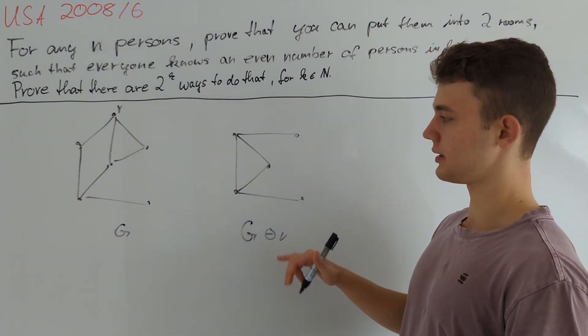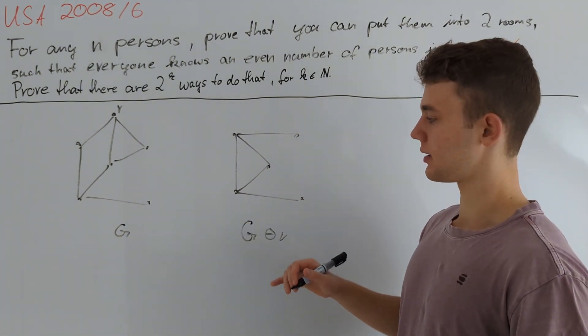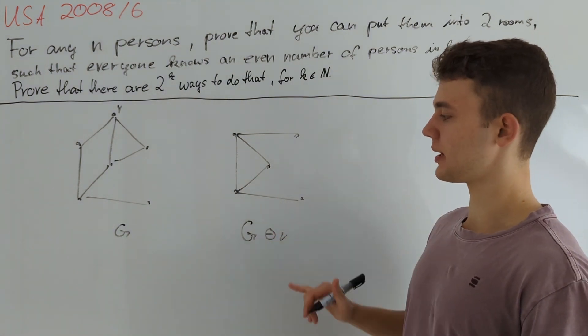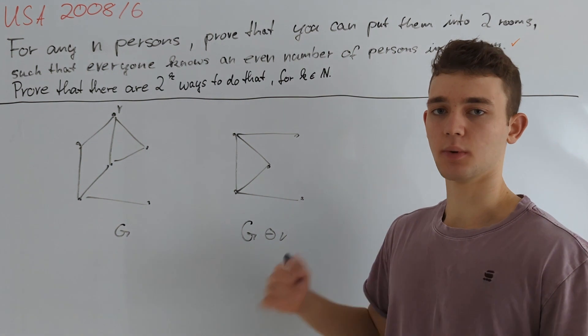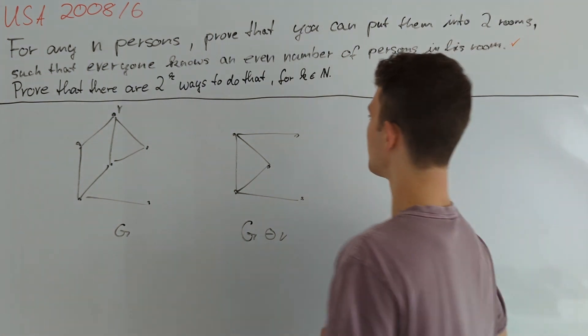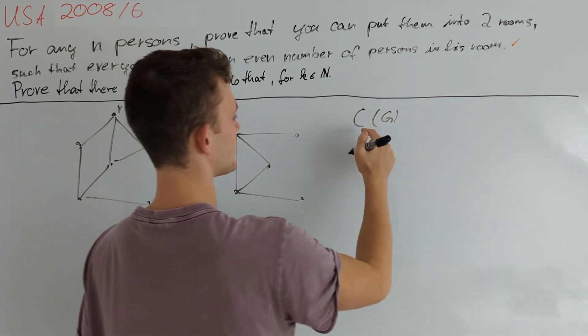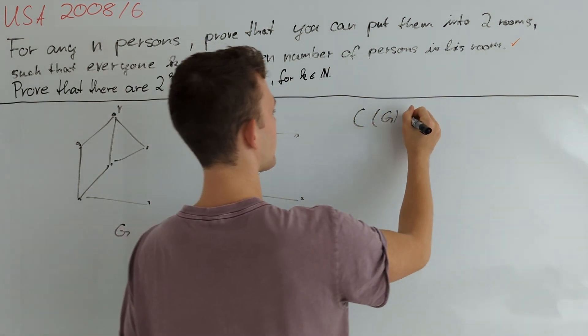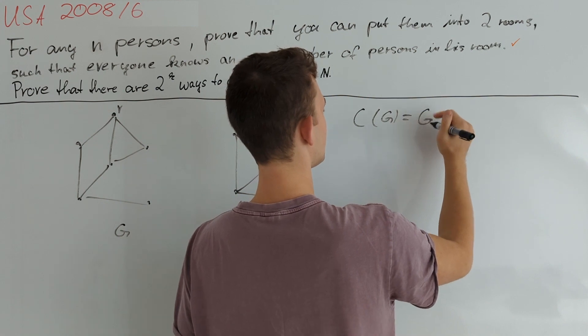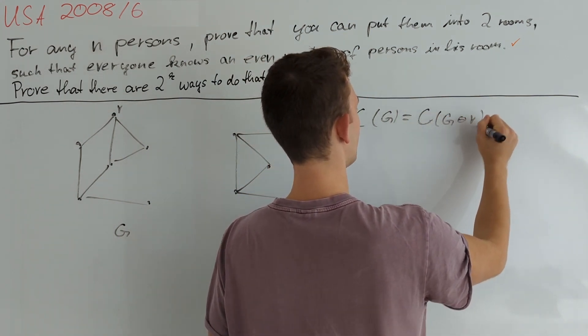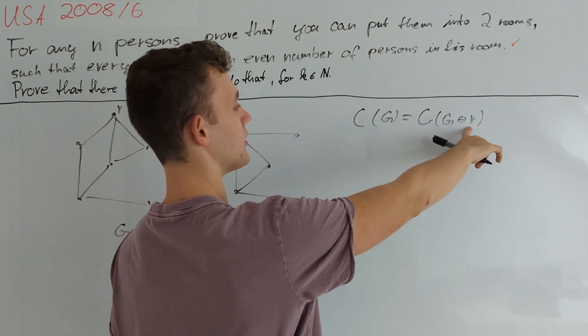In that video we explained in detail why that works and one can actually see that this mapping between nice configurations in G minus V and G is one to one. Therefore we can actually conclude that if we define C(G) to be the number of nice configurations in G, then C(G) equals C(G minus V) for any vertex V in G of odd degree.